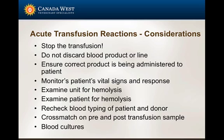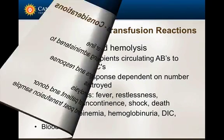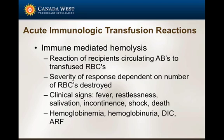You may want to do further cross-matches on that unit that has potentially caused a reaction. When we look at an acute immunologic transfusion reaction, one that is hopefully not common — because we're going to be doing cross-matches — is an immune-mediated hemolytic reaction. That's the reaction of the donor to the recipient's circulating antibodies to their own red blood cells. The severity depends on the number of red blood cells destroyed and the circulating antibodies.